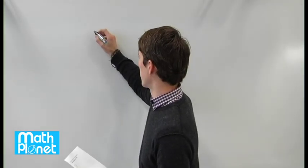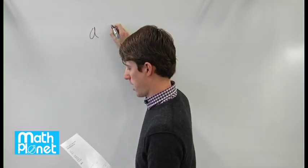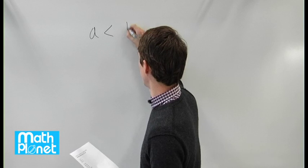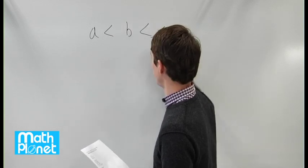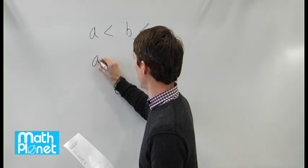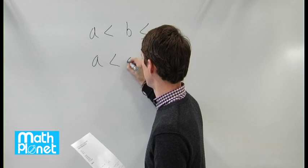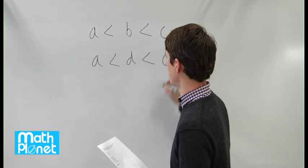We know the following statements to be true: A is less than B, which is less than C, and A is less than D, which is less than C.